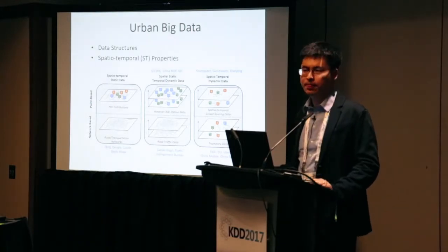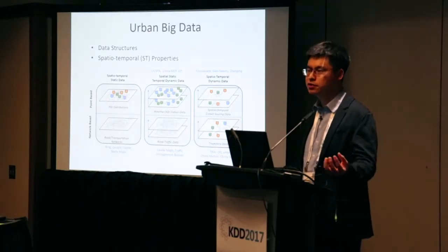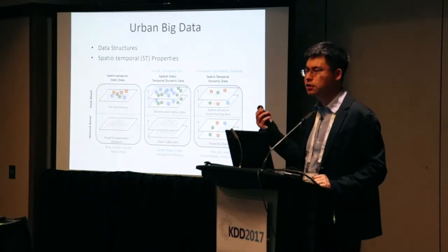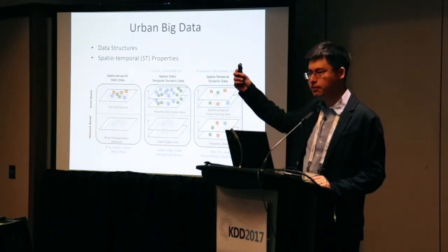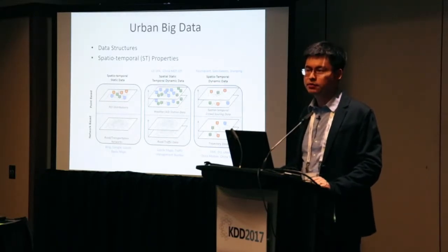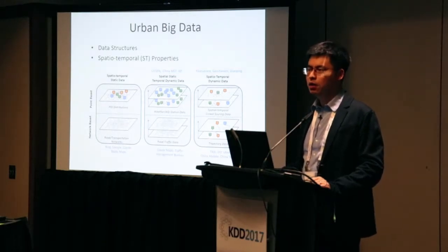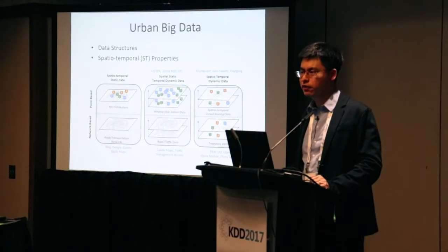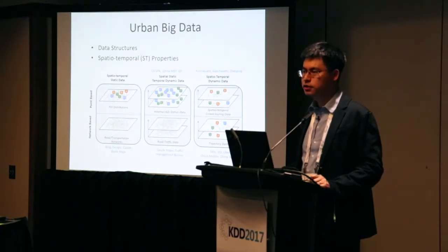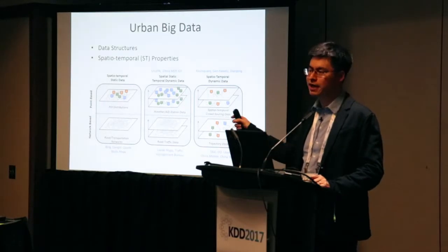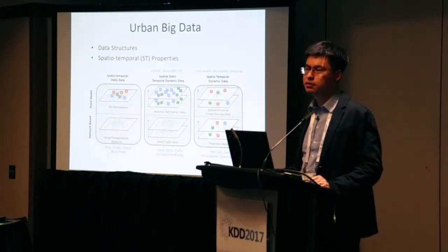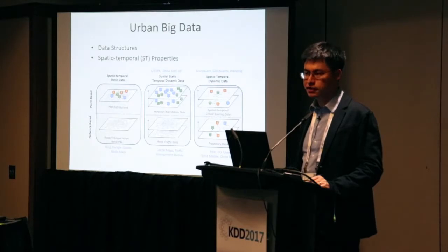We also have spatial-temporal dynamic point data — for example, Uber or DiDi requests, where a user issues a query at some location at some time, and both location and time change. Regarding network-based data: road networks are fixed once built, so they're spatial-temporal static graph data. But when we overlay traffic onto the network, we get spatially static but temporally dynamic traffic on different road segments.